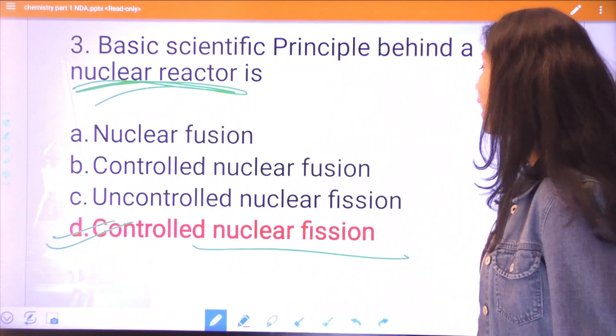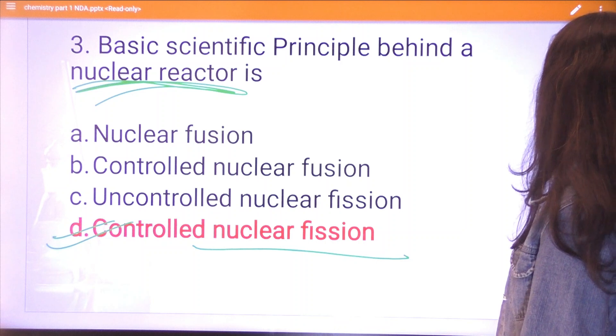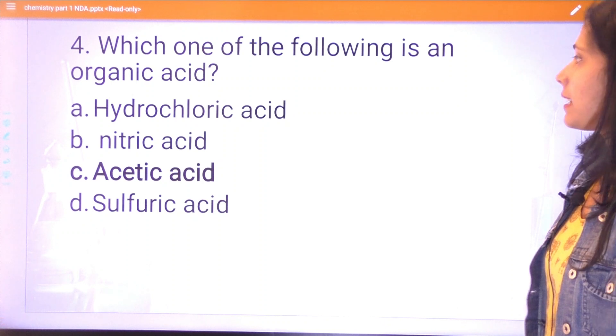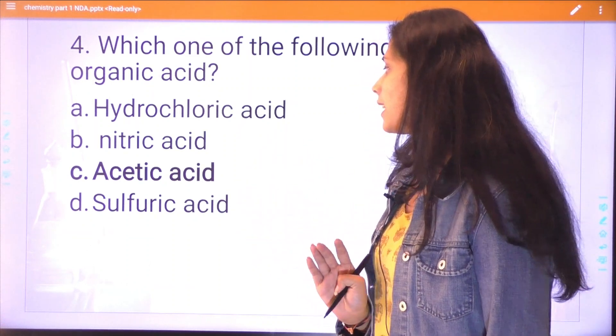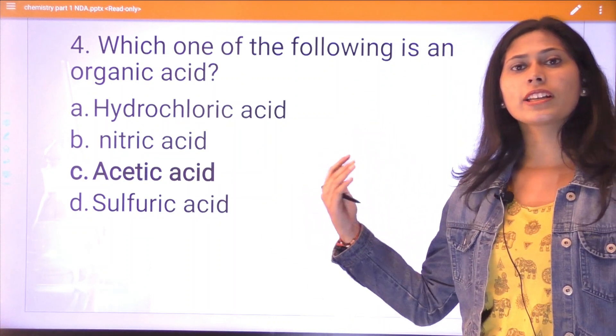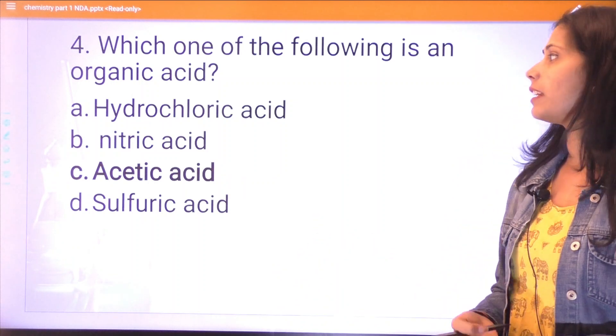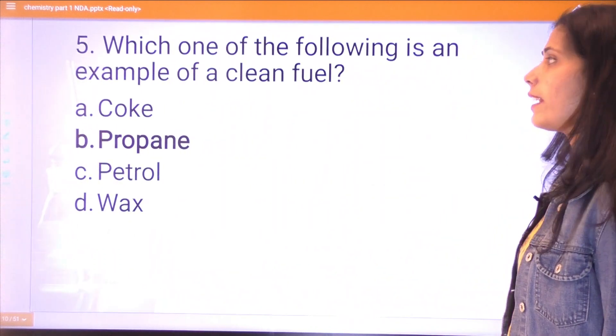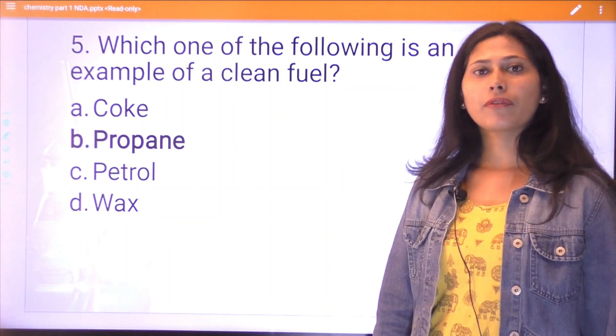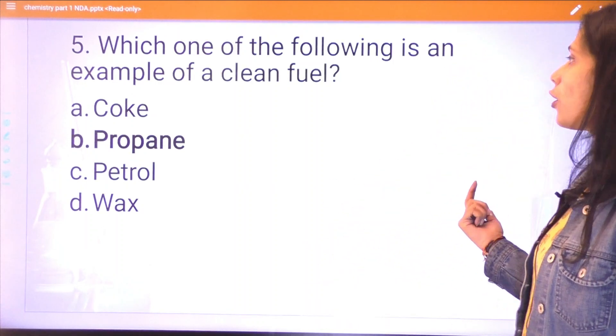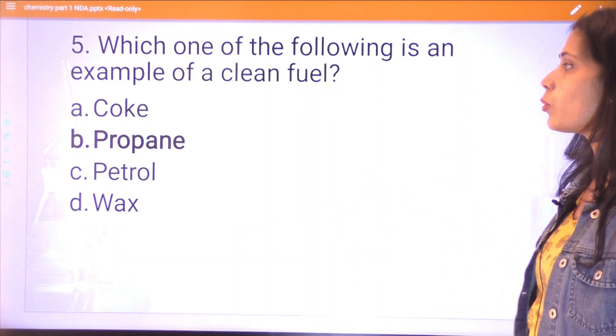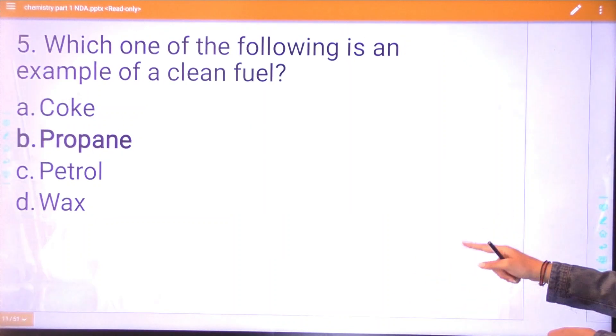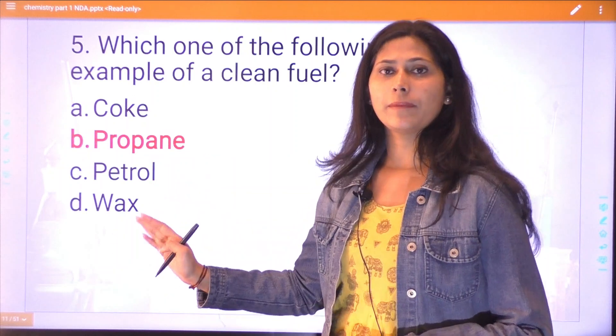Question four: which one of the following is an organic acid? HCl, nitric acid, acetic acid, or sulfuric acid? Everyone has studied organic chemistry in 11th and 12th, so you will know that acetic acid is the organic acid. Question five: which one of the following is an example of a clean fuel? The options are coke, propane, petrol, or wax. The correct answer is propane.